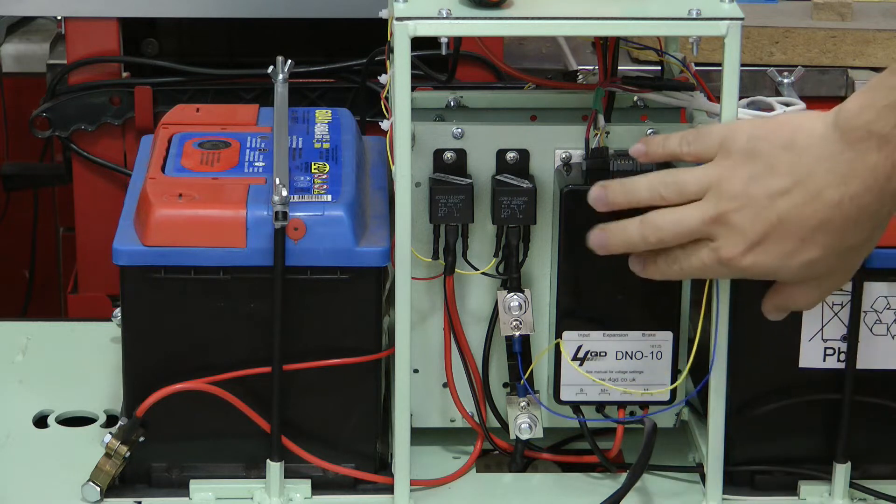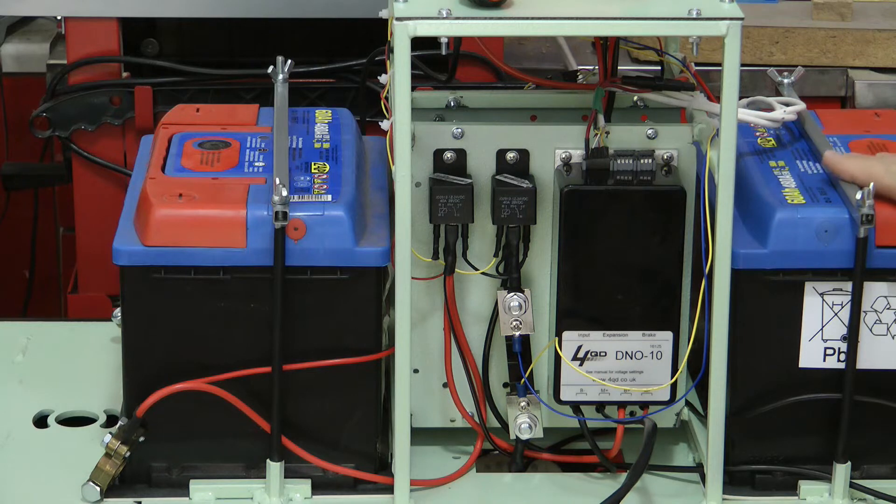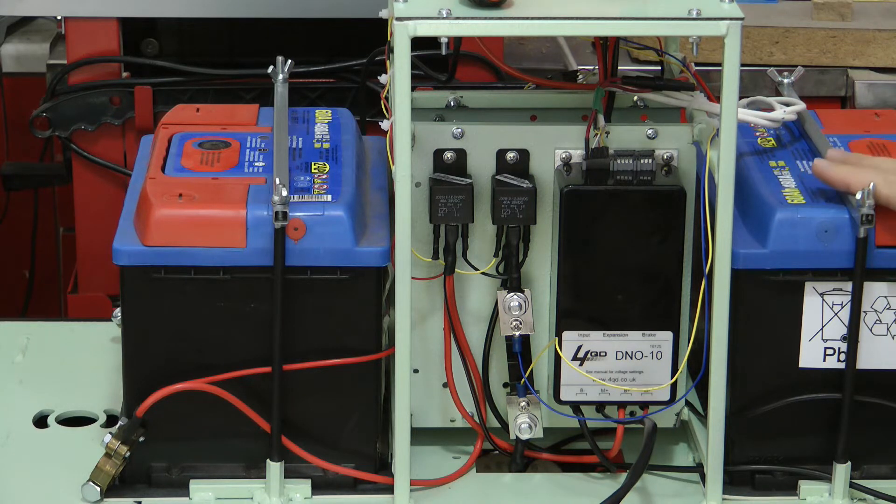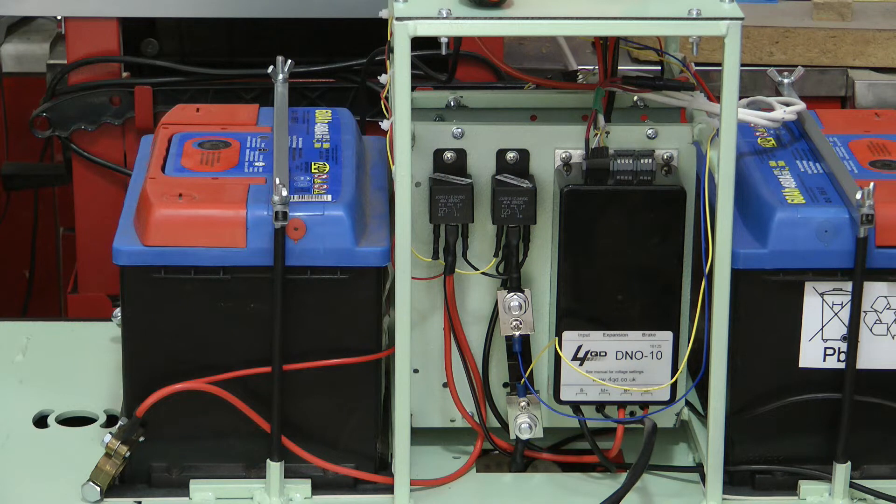I've reused my 4QDD and DNO10 to control my loco. The control is pretty much the same as in my previous loco. I have two batteries - these are my old batteries that I replaced with new ones in the older loco. This one is still good, this one is pretty much dead measuring like 10 volts, but for testing it's good enough.